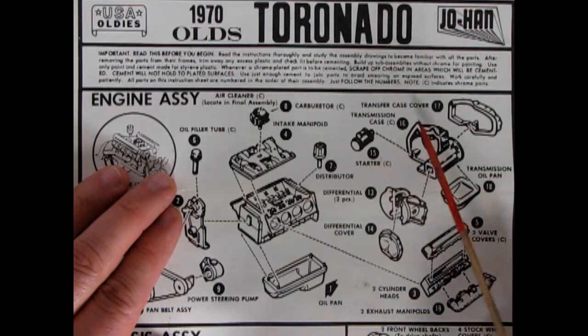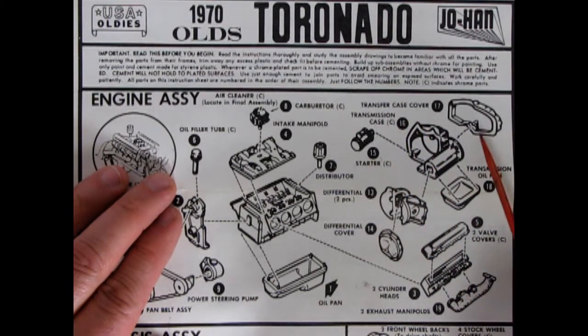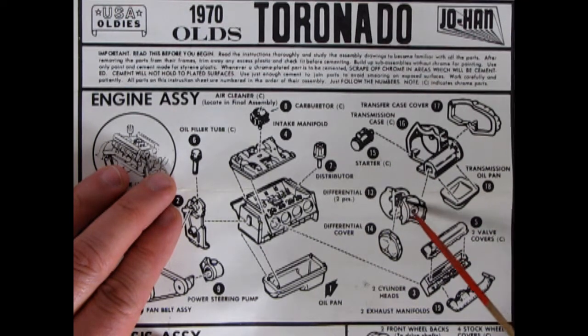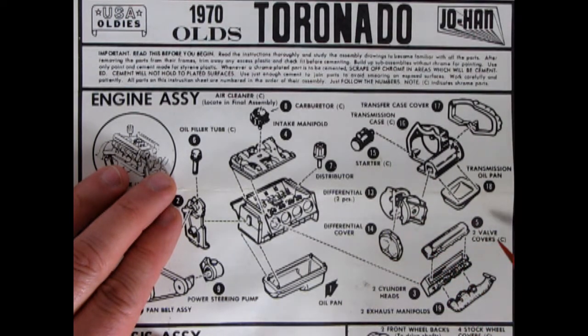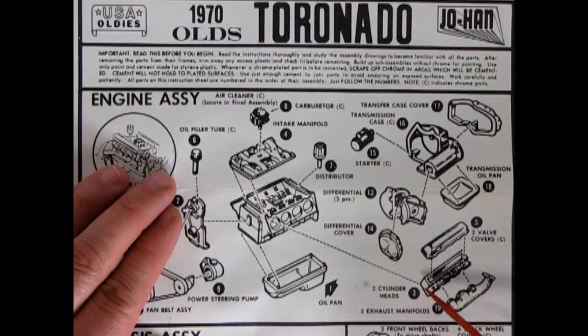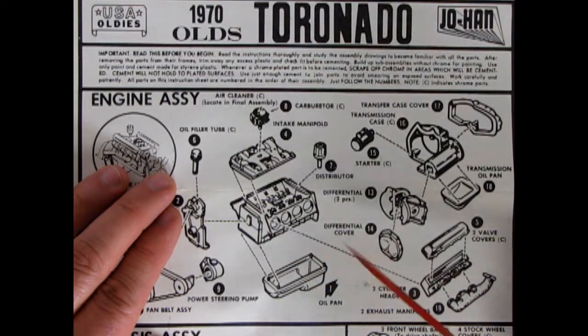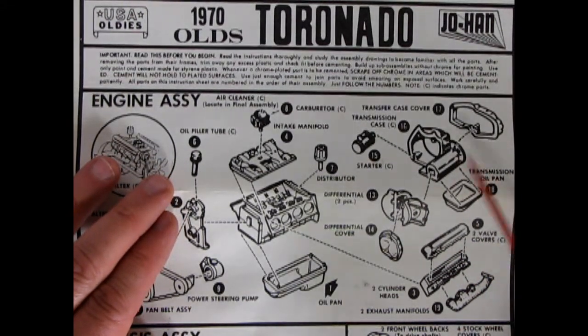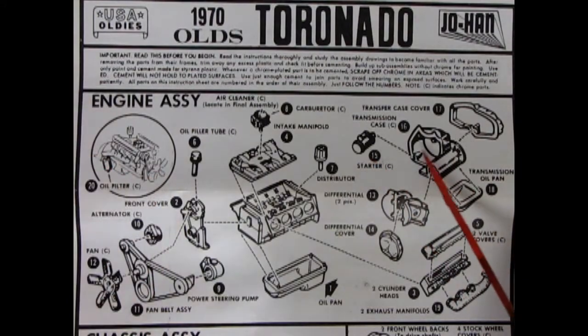There's our transfer case cover, our transmission case, transmission oil pan, our differential sitting here and our differential cover. There's our cylinder heads, you get some for both sides of course, your exhaust manifolds and your valve covers which are chrome as indicated by the little C, and then we've got our starter on this side of the engine.